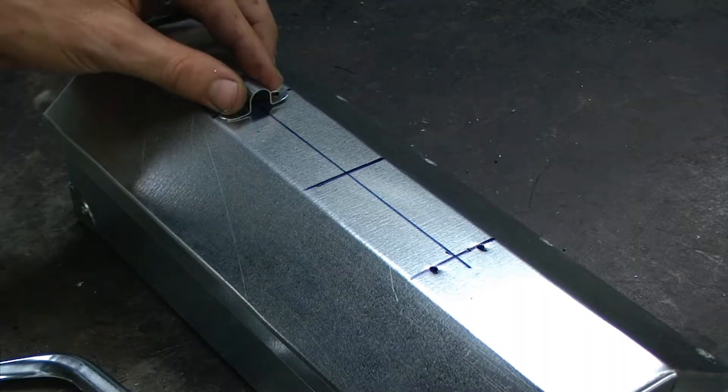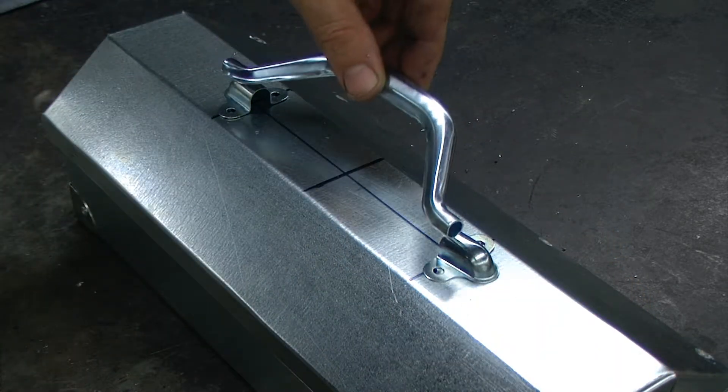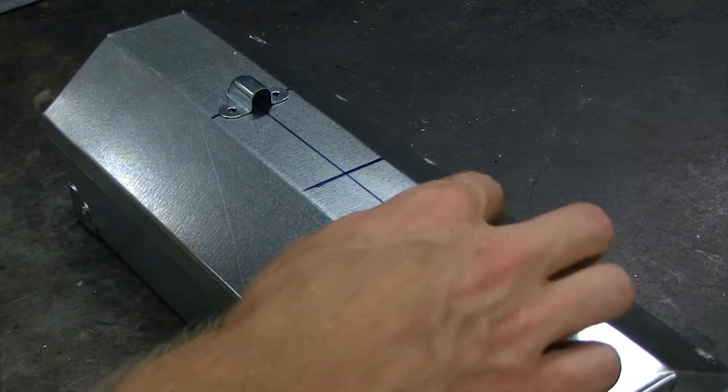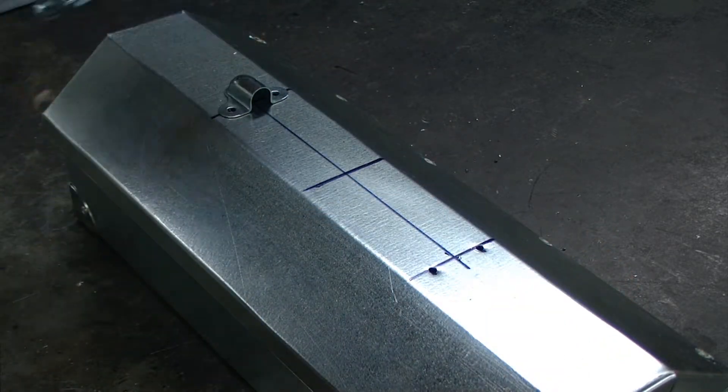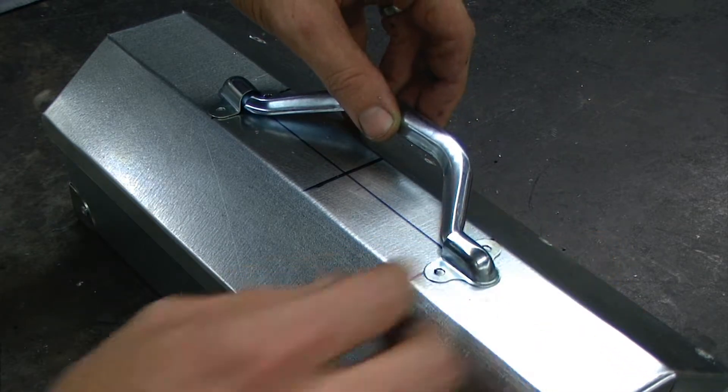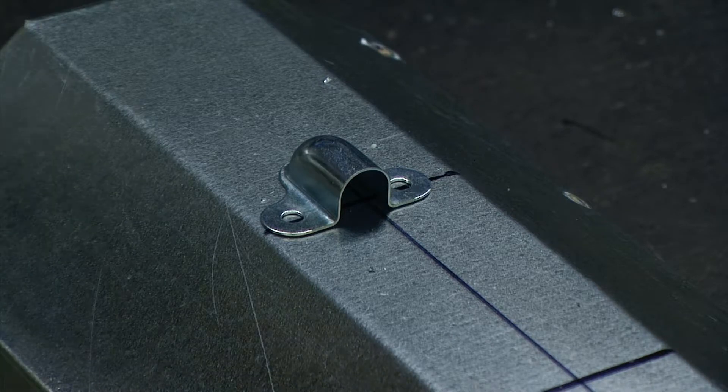Now, if you install both of the ends, the handle will not fit in. You won't be able to get the handle in there. So we need to install one end, place the handle in position, and then install the other end. This will also be done with pop rivets.